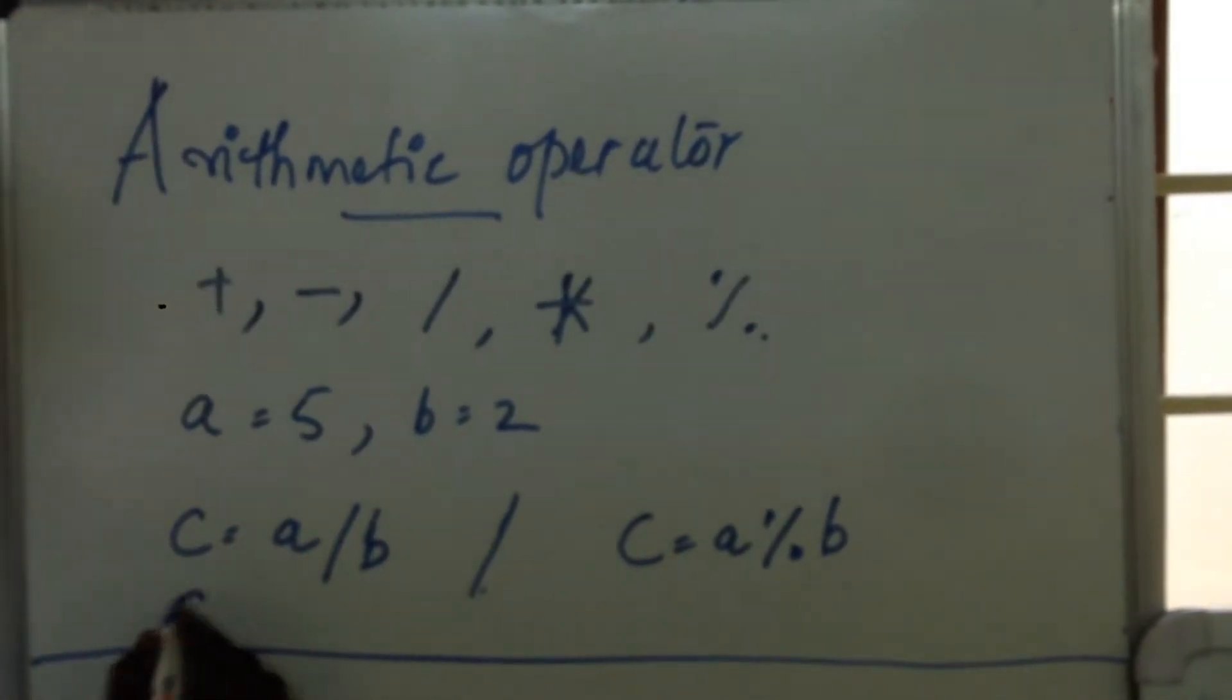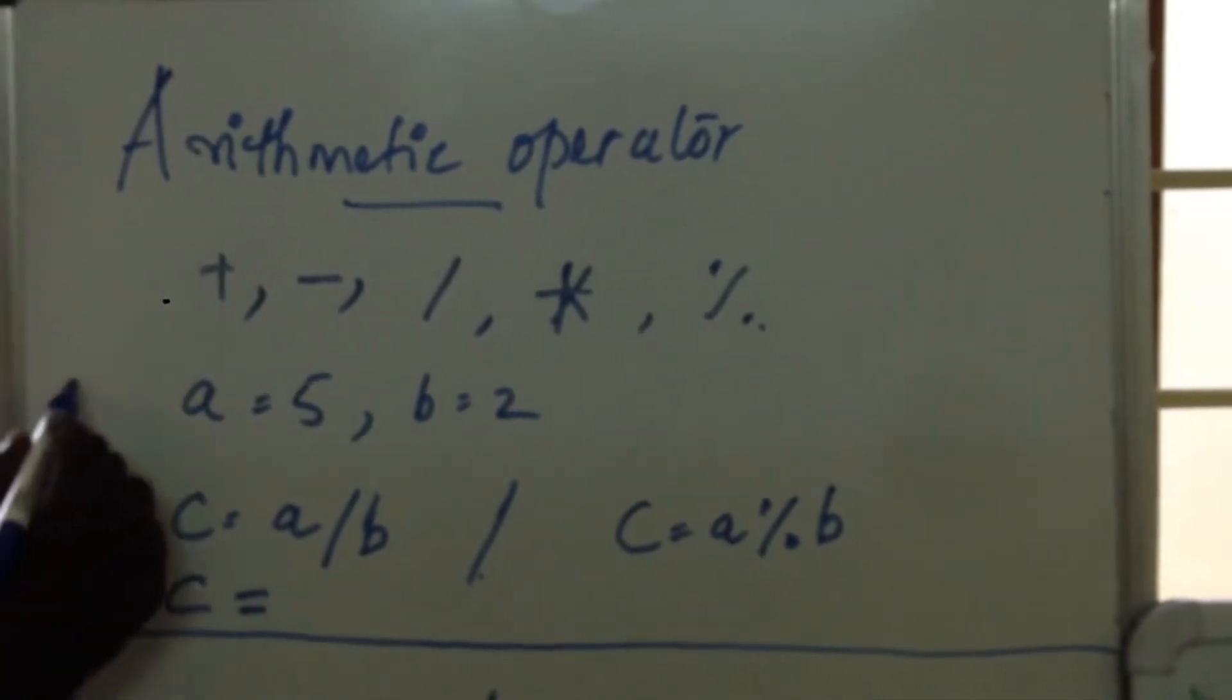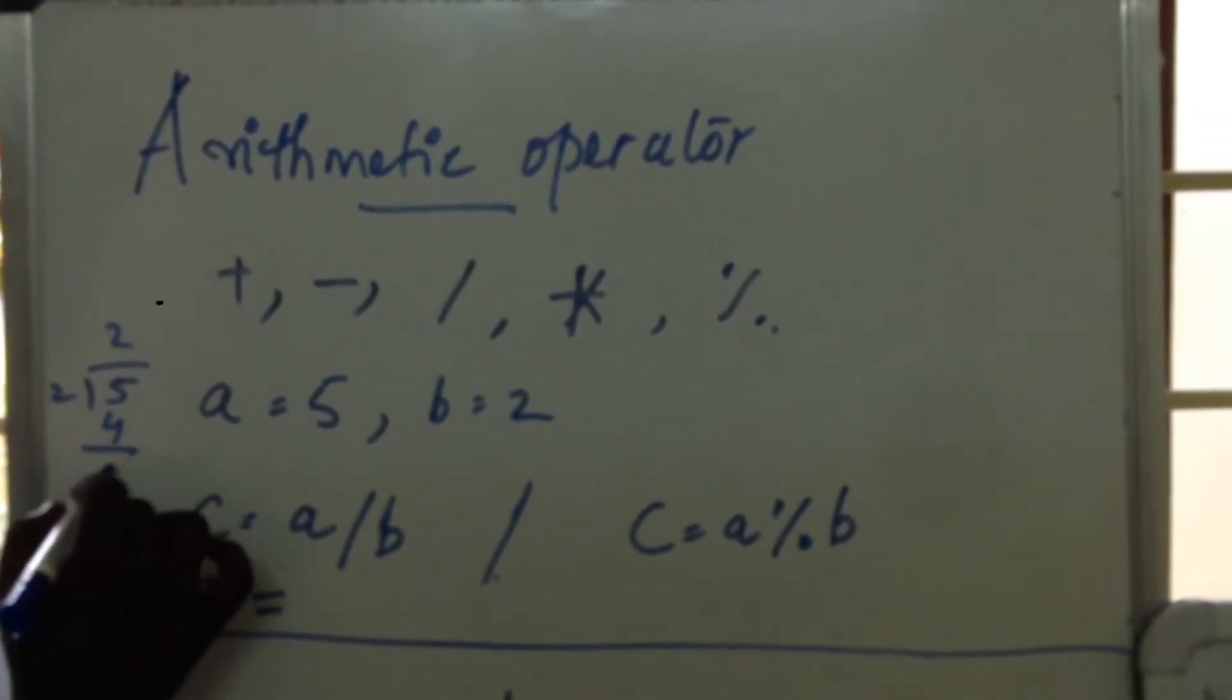Then the value of c, since c is an integer, it can hold only integer values. 5 by 2, 2 into 5 is 2, the remainder is 1.